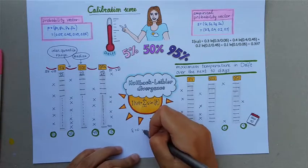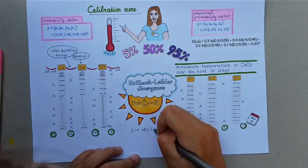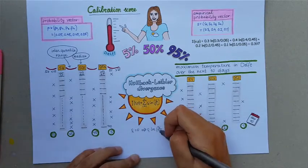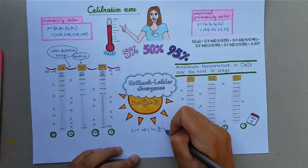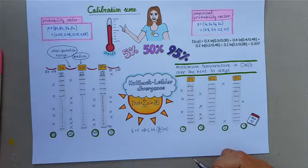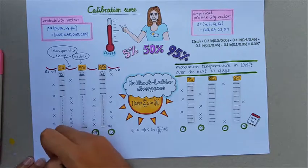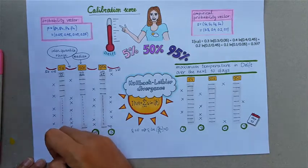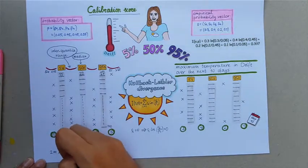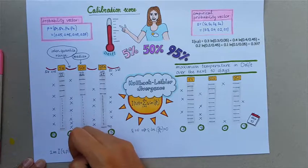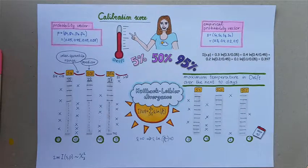By convention, if Si is 0, then Si times the logarithm of Si divided by Pi is always 0. It is known that in our setting, 2 times M times the I(S, P) is asymptotically following a chi-square distribution with 3 degrees of freedom for M large enough.